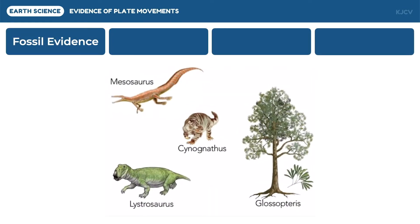Since Pangea existed during the Permian period, one important evidence that may support the continental drift theory is the field of paleontology, or study of ancient life. Paleontologists needed to look for pieces of evidence of life on the locations that are said to be connected.